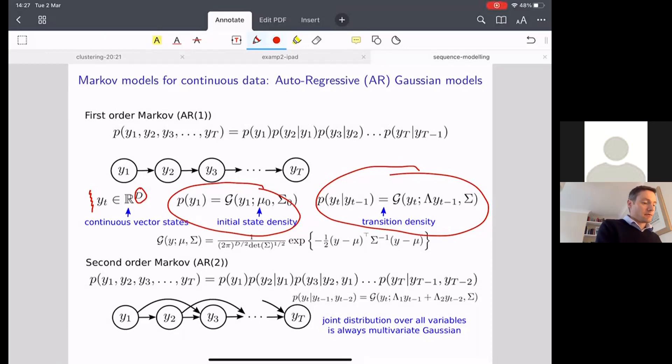Obviously categorical distributions are inappropriate for real value data, so what are we going to use? We're going to do the most basic thing for this particular model. We're going to assume that the first item in our sequence is going to be a Gaussian random variable, drawn from some Gaussian with a mean μ₀ and a variance or covariance Σ₀. That's going to be our initial state density.